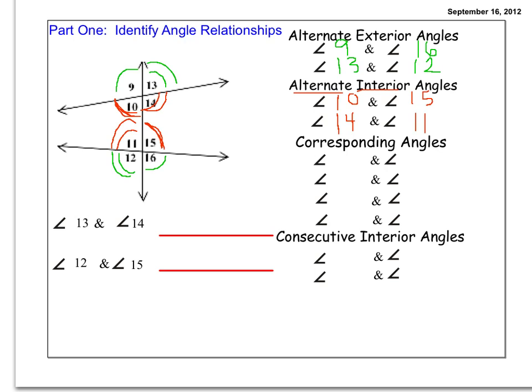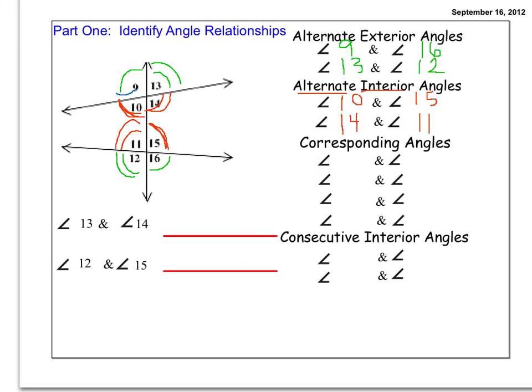The next set of angle pairs I'm looking for would be called corresponding angles. Corresponding are where they're in the same position on your graph. So if you take a look at angle 9, it's in the upper left hand corner of what I call this intersection. Think of it as a street where the transversal meets the horizontal. It's in the upper left hand corner. What other angle is in the upper left hand corner, but coming from this intersection would be angle 11. So one pair of corresponding angles are 9 and 11.